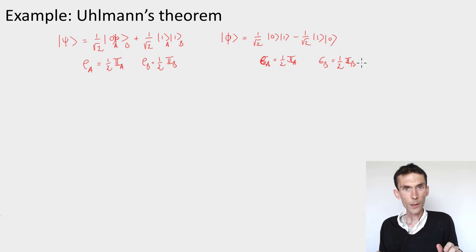So these two states are orthogonal, meaning they can be perfectly distinguished globally, but locally they look exactly the same. If you hold only the A system, whether it's the A system from psi or the A system for phi, you cannot tell the difference.